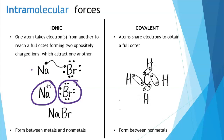Ionic bonds typically form between metals and nonmetals, because metals tend to form positively charged ions and nonmetals tend to form negatively charged ions. Covalent bonding, on the other hand, is when atoms share electrons to obtain a full octet. For example, a carbon atom with four valence electrons shares one electron with each of four hydrogen atoms — each hydrogen gets its duet, and carbon ends up sharing eight electrons, giving it a full octet. Covalent bonds typically form between all nonmetals.